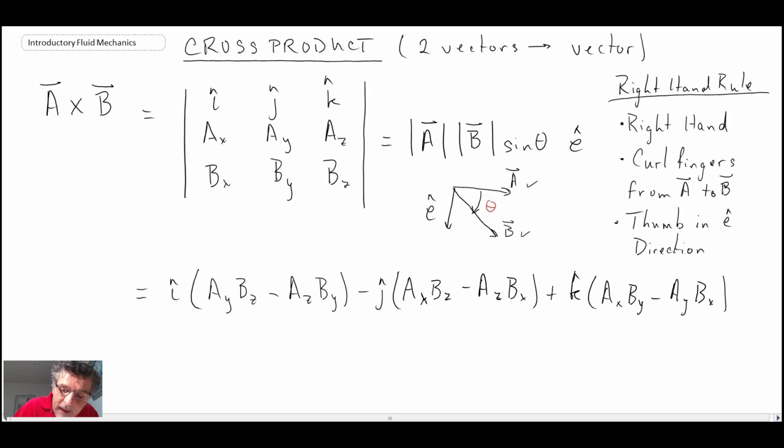And then it's plus in the k direction, which is going to be a_x b_y minus a_y b_x. Hopefully, I didn't make a mistake there. That's supposed to be an a_x. Okay, that looks good.